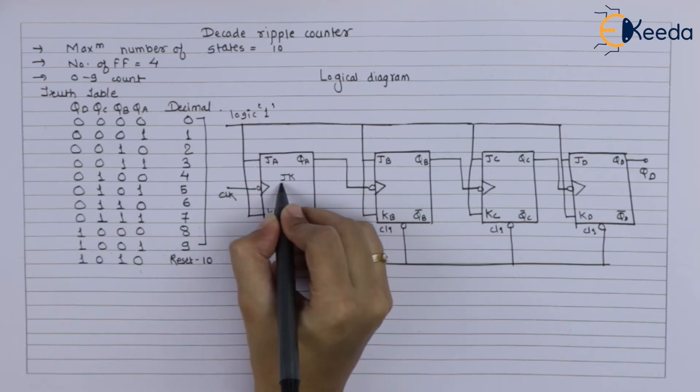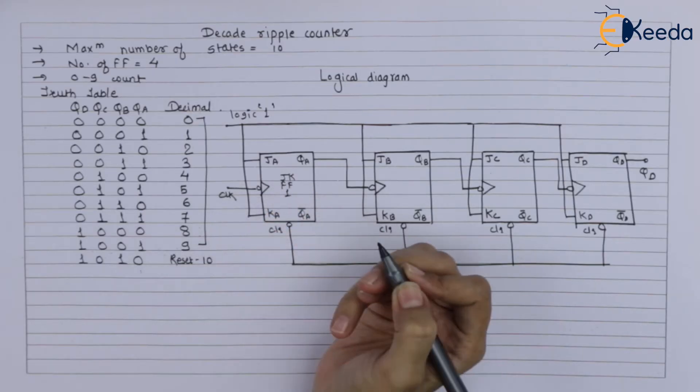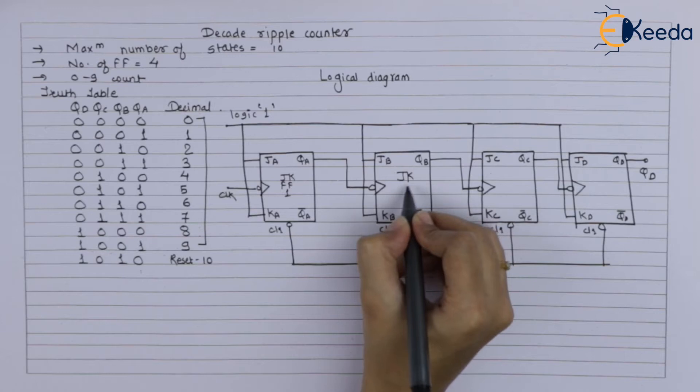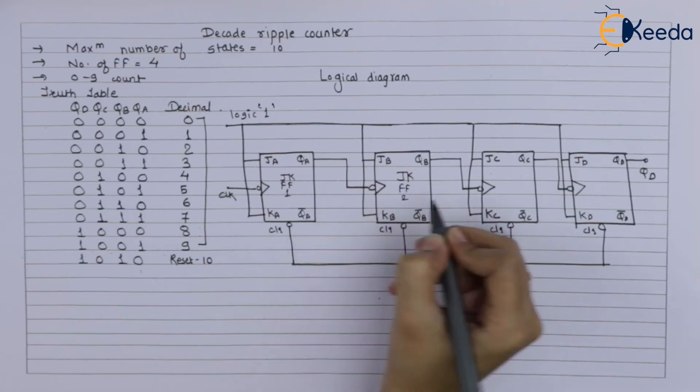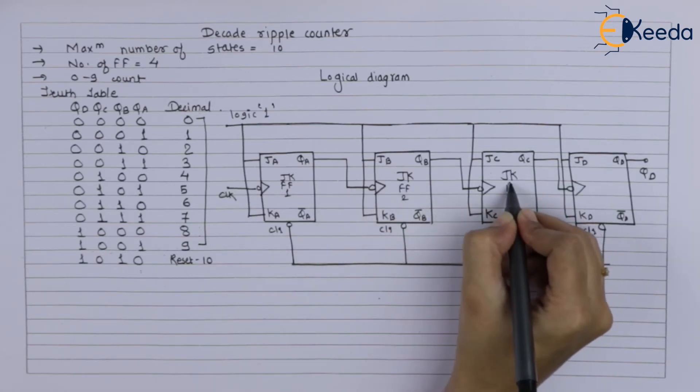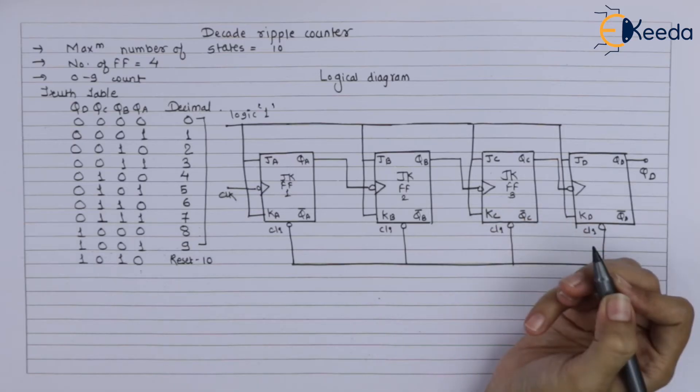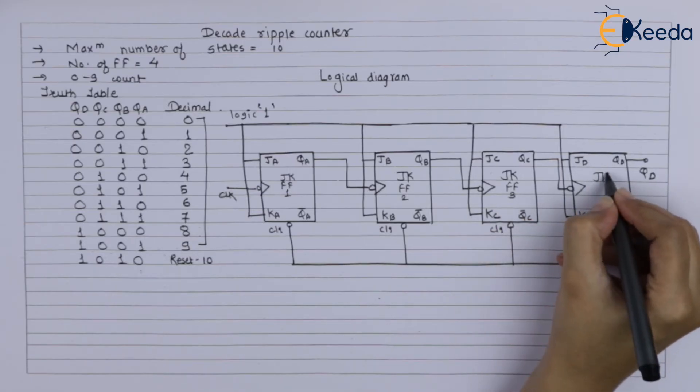This is your JK flip flop 1, JK flip flop 2, JK flip flop 3, and here it is flip flop 4.